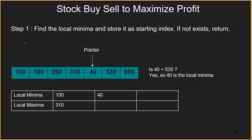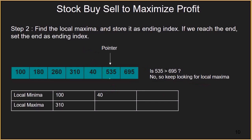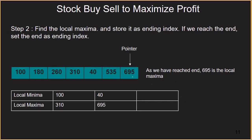Now we move back to step 1 to find the next local minima. We compare 40 with 535 — since 40 is smaller than 535, we have found the local minima. Then for step 2, we compare 535 with 695 — since 535 is smaller than 695, it is not the local maxima, so we keep looking. Since 695 is the last element of the array, it becomes the local maxima. So to get the maximum profit, one should buy at 100 and sell at 310, then buy at 40 and sell at 695.